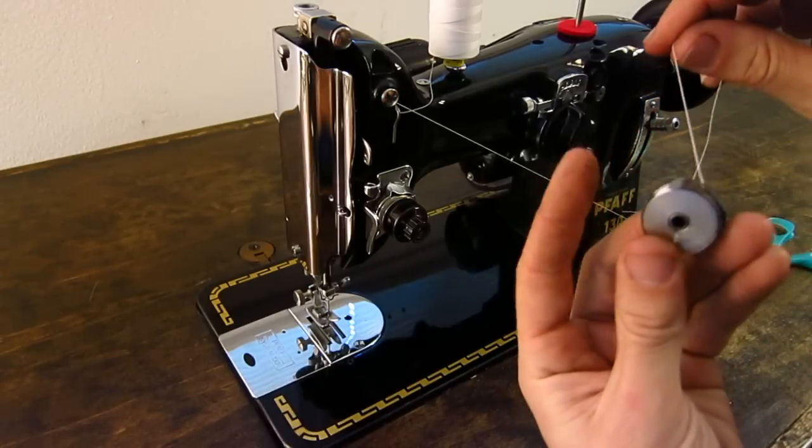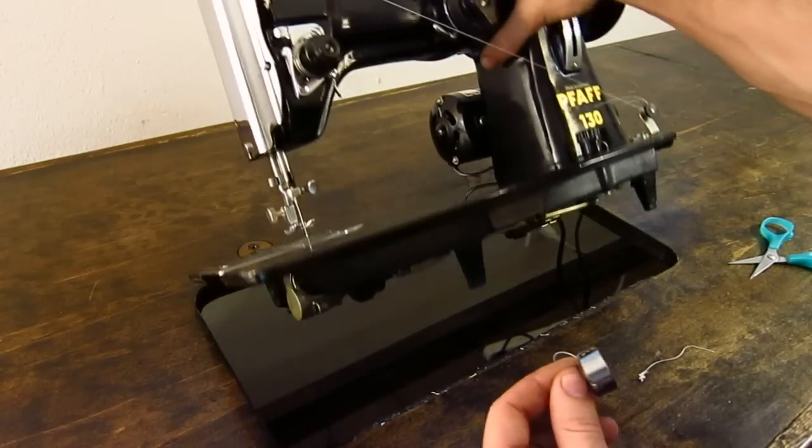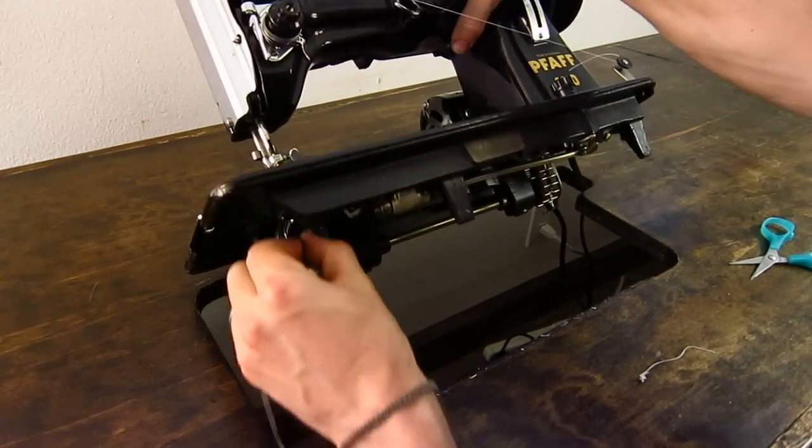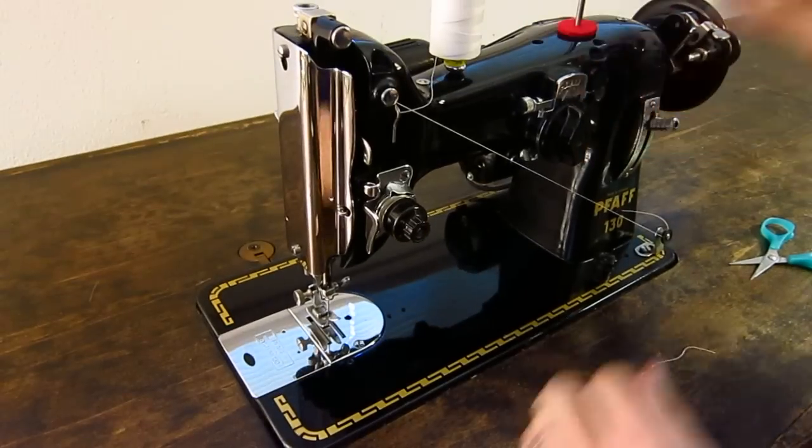This particular thread I'm using is white so you can see it on the material that I'm going to be sewing. It's a Gutermann Mara 70, which is a tex 40 thread.